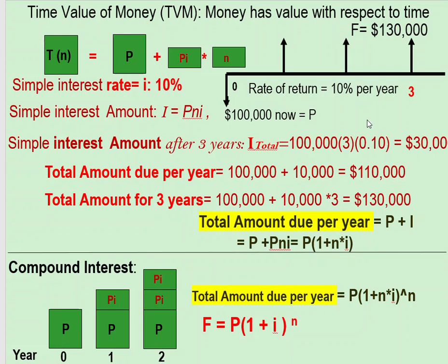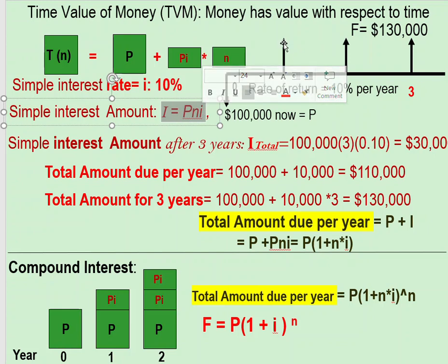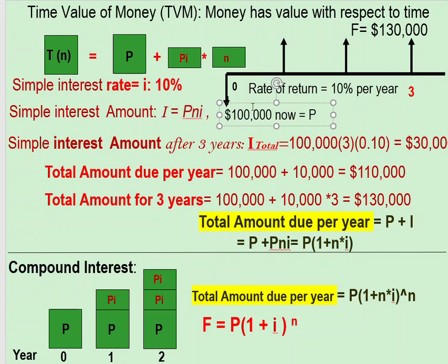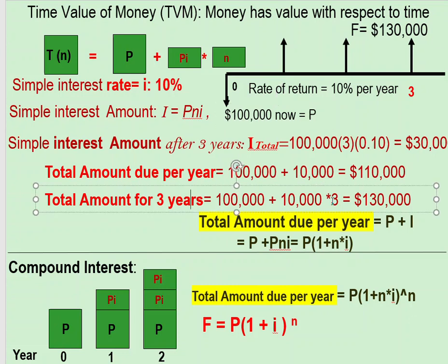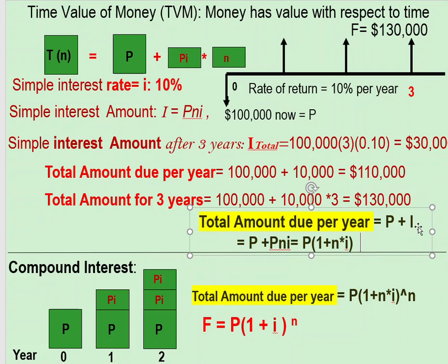The future equivalence of the money is the total amount, which is the principal plus the interest amount. So it's a hundred thousand plus thirty thousand — that gives you one hundred thirty thousand. There are three factors to keep track of: interest rate as a percentage, the interest amount in dollars, and the total future value.